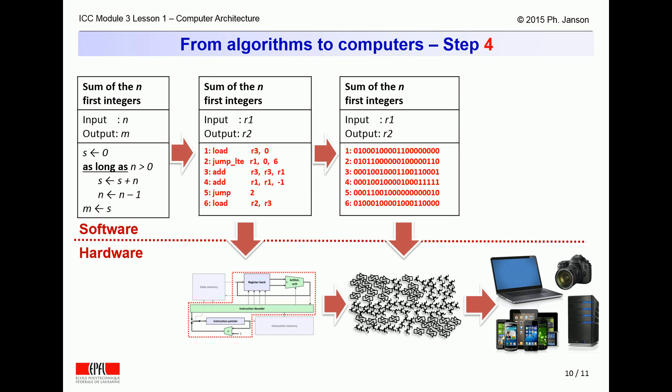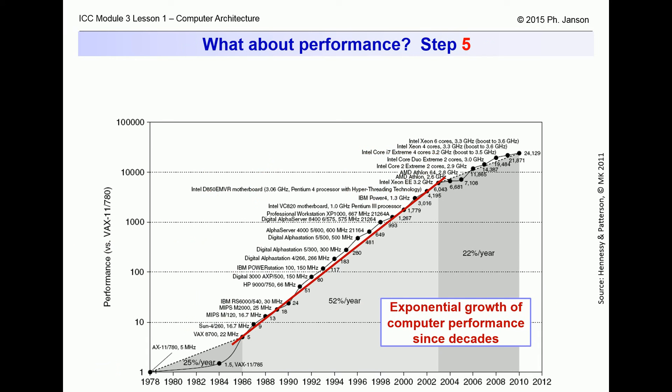The fourth step on this journey will finally show how transistors can be used to implement a step 2 von Neumann architecture computer capable of directly executing a step 3 binary program. The last two video clips of this architecture lesson will finally show how computer performance can be gained beyond the speed of transistors through two different kinds of parallelism.